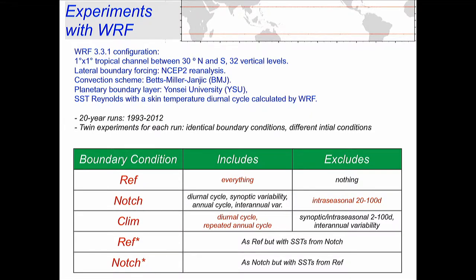The 20-year runs: one uses initial conditions from the beginning of 1993, and the other uses 1st January 1994 as the initial condition. After a month or two the model adjusts, and what we have are two identical runs with identical boundary conditions. The difference between the two we treat as internal variability in the model — a measure of how independent the two runs are, which is inversely related to the importance of the boundary conditions.